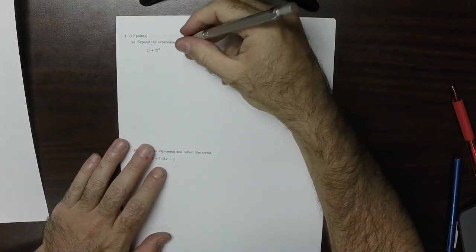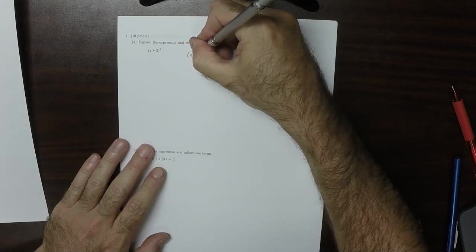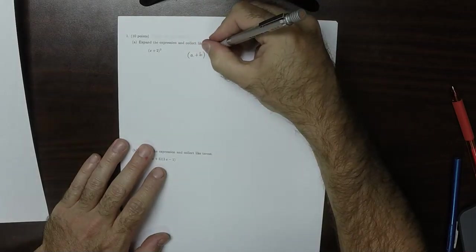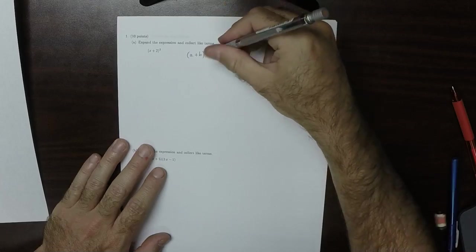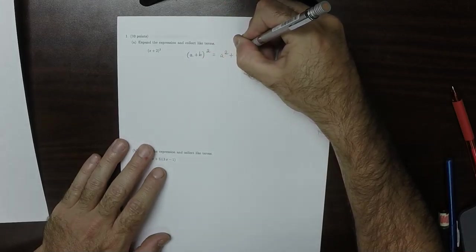So then recall that the rule is that a plus b squared is a squared plus b squared. Most people can remember that.